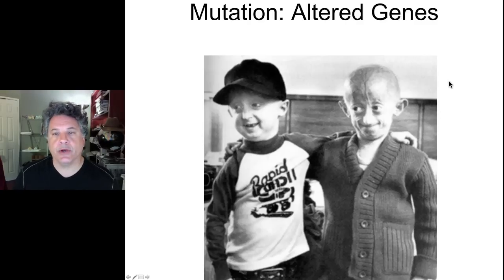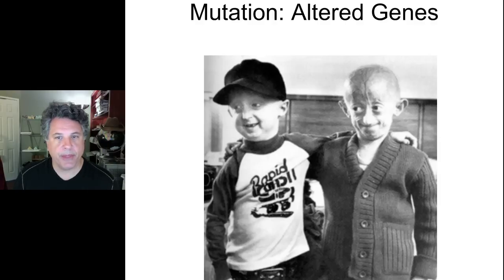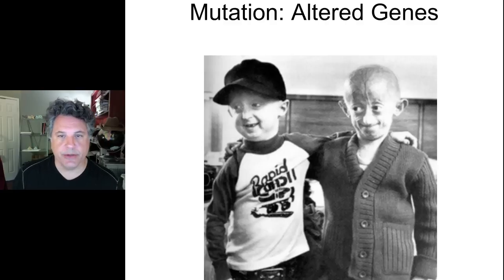There's another premature aging disease — another type of progeria — that is caused by a mutation in the gene that encodes one of the DNA helicases involved in unwinding DNA during DNA replication and repair. That is called Werner's syndrome, another progeric type of mutation.